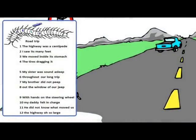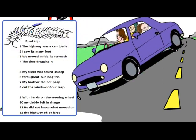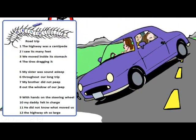Here we have a cool poem because you see this kind of creepy but kind of cool centipede. Read the first two lines: 'The highway was a centipede. I saw its many feet.' The picture helps you see exactly what the speaker was imagining. Here we have a car, the speaker, the sleeping baby sister, and the father who is driving. Adding this picture makes the poem more fun to read, because you can have more than the text to look at, and you can add your own imagination as well.